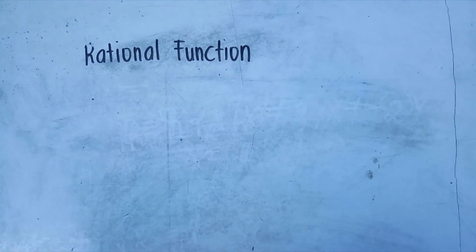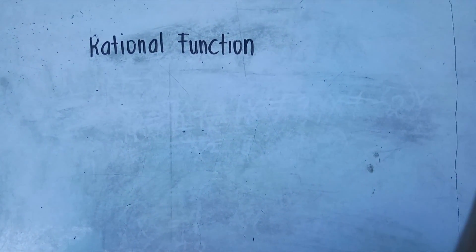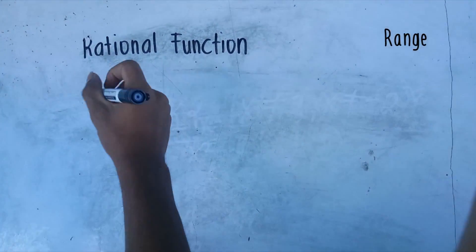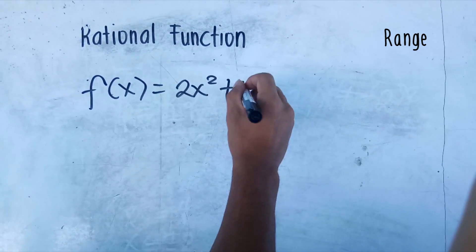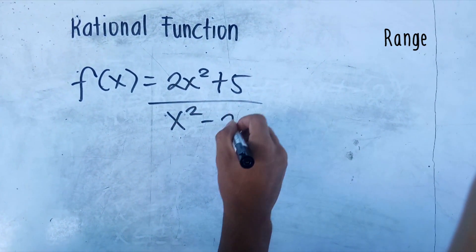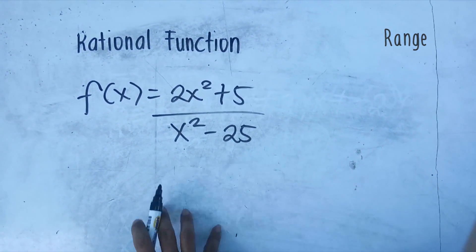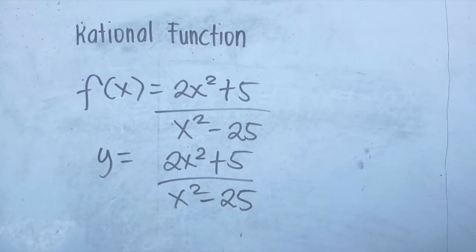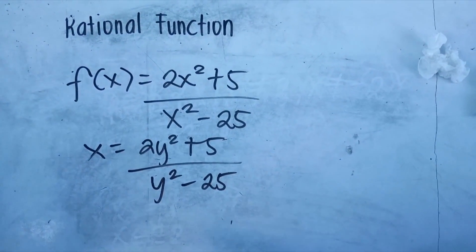Now we are going to determine the range of a rational function. To find the range, we must first find the inverse of the given function. We replace f of x with y, then interchange the variables y and x, and then solve for y.